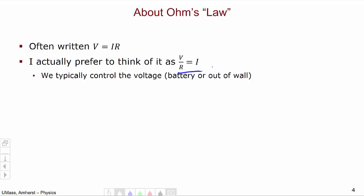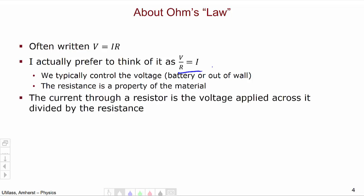So the voltage we control and the resistance is a property of the material or the electronic component that you're dealing with. It's intrinsic to that item and it's the current that changes based upon the voltage and the resistance.